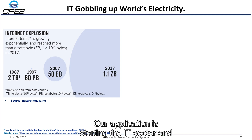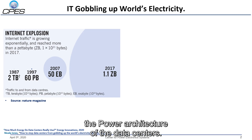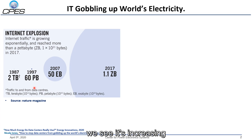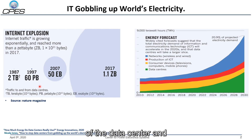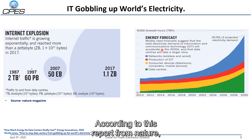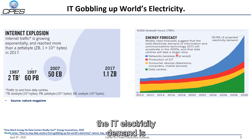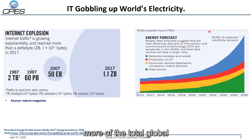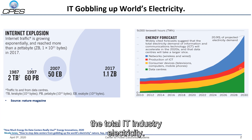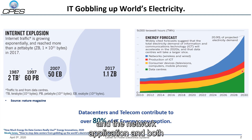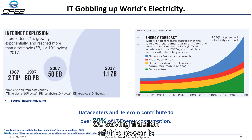Our application is targeting the IT sector, and specifically the power architecture of data centers. Internet traffic is increasing exponentially year by year, which reflects on the energy consumption of the data center and IT industry overall. According to a report from Nature, IT electricity demand is expected to increase up to 20% or more of the global electricity demand by 2030. Data centers alone consume 50% of the total IT industry electricity, and our target applications — data centers and network — contribute more than 80% of total IT energy consumption. So saving even a fraction of this power is very important.